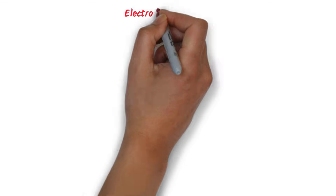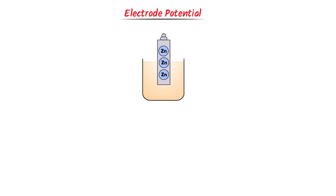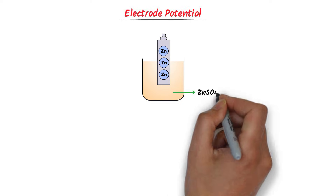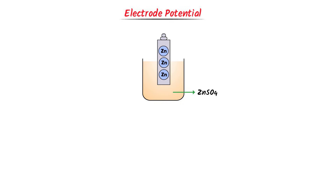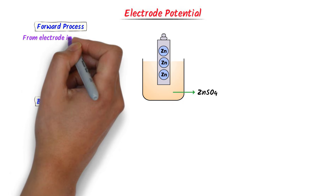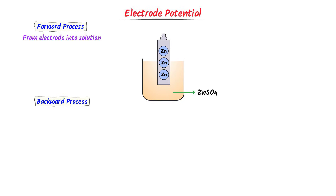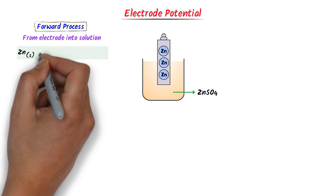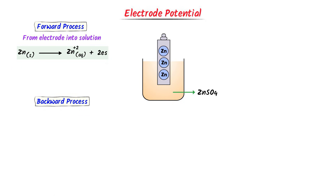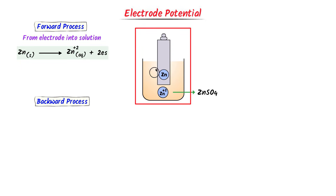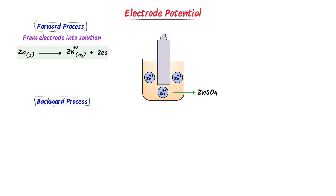Now we will learn all about electrode potential. I take this zinc electrode and keep it in its own electrolyte solution like zinc sulfate solution. To master electrode potential, we must learn the forward process and backward process. In the forward process, the flow is from the electrode end to solution. The electrode is solid zinc — it loses two electrons to become zinc²⁺ ions, which dissolve in the zinc sulfate solution. When a zinc atom dissolves in this solution, it leaves a negative charge on the electrode.